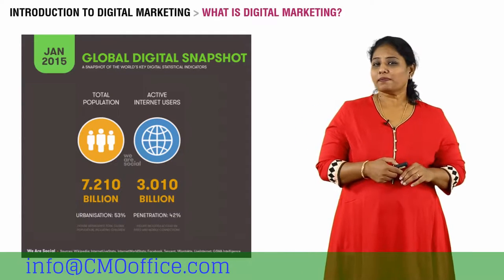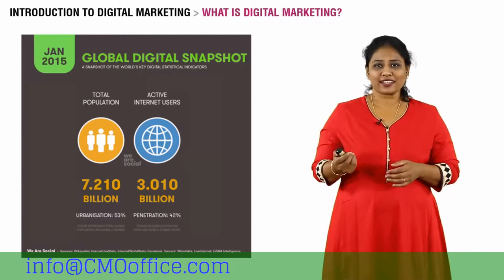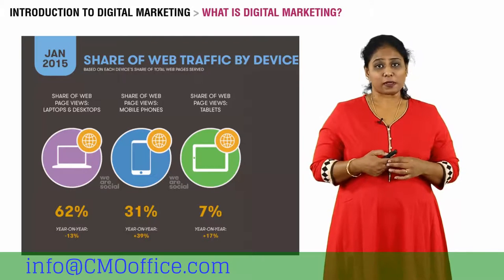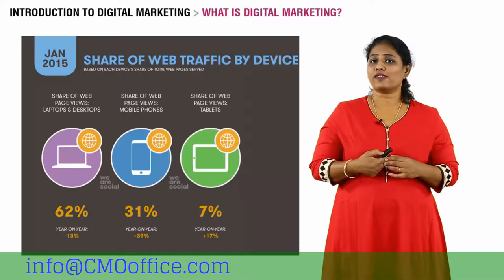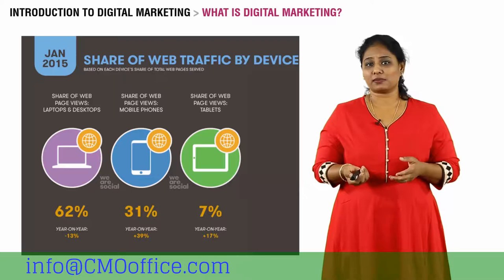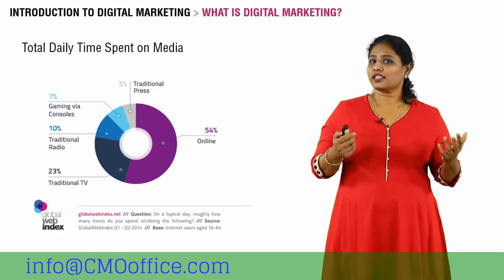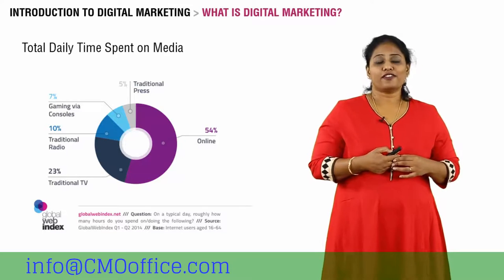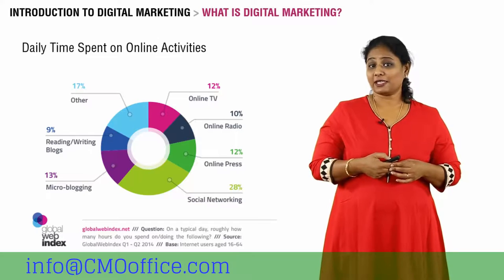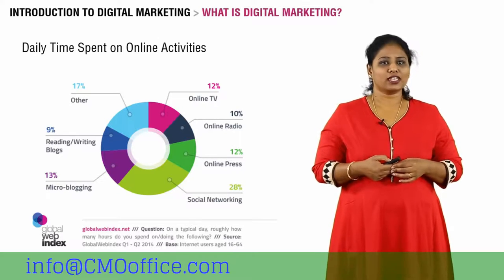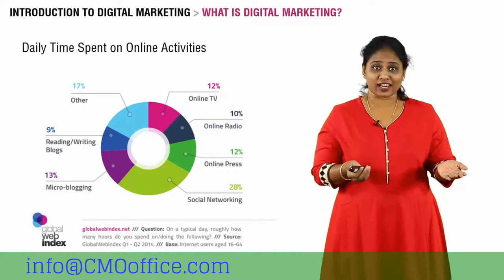As I mentioned before, there are 3 billion people who are online today, which is close to 40% of the world's population. 62% of these people are browsing the internet through their computers or desktops; 31% are doing so through mobile devices — the smartphone revolution has made this possible; and 7% do so through tablets. Of the total time spent on media, 54% is spent on online media. Of that 54%, 28% is social media, which in most cases is Facebook; 13% is micro-blogging, which is mostly Twitter; and the rest is a mix of blogs, news, online TV, and other activities.